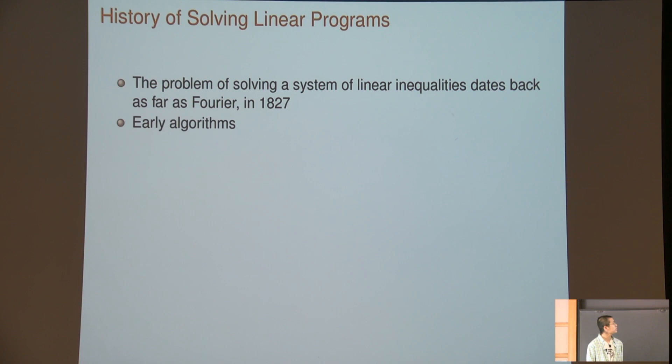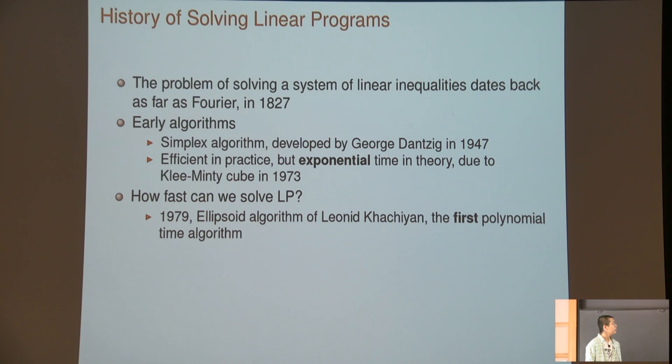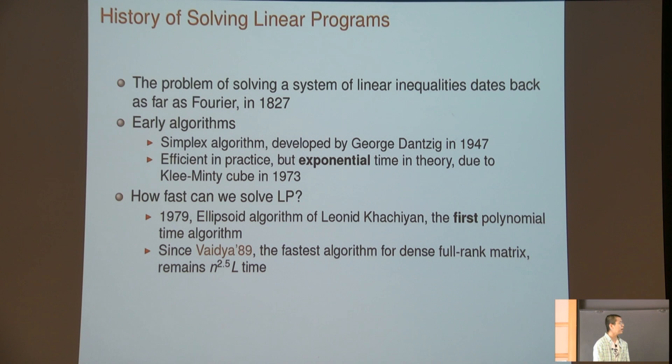The history of linear programming is quite long, dating back 200 years. The early algorithm called the simplex algorithm is very efficient in practice but has very bad theoretical performance—it requires exponential time due to some counterexamples. Then the question is, how fast can we solve linear programs? In 1979, the first polynomial time algorithm was developed by Leonid Khachiyan. It runs in roughly n to the sixth time. Since 1989, Vaidya's algorithm, the fastest LP algorithm, remained n to the 2.5. Here, L is the number of bits for each entry of the matrix. For the worst case, if the matrix is dense and full rank, we couldn't beat this barrier.